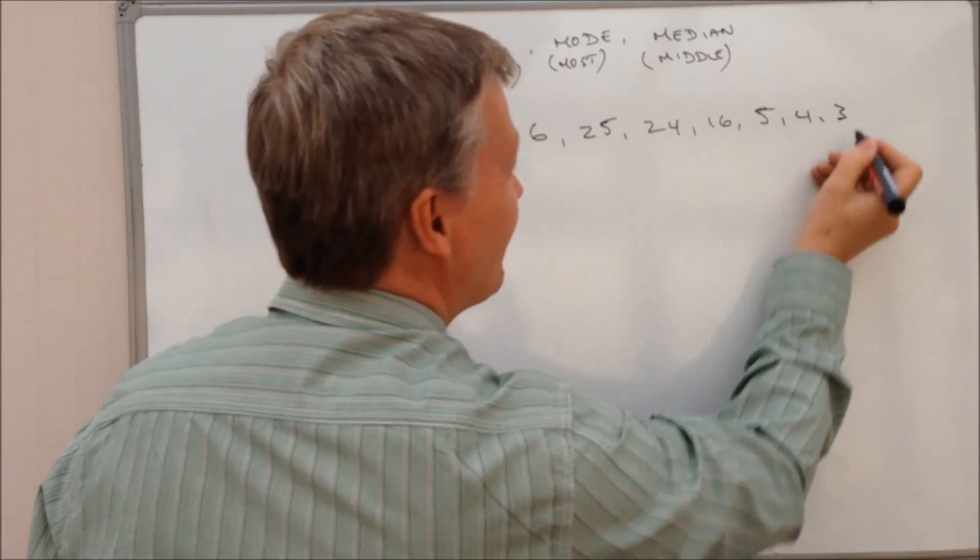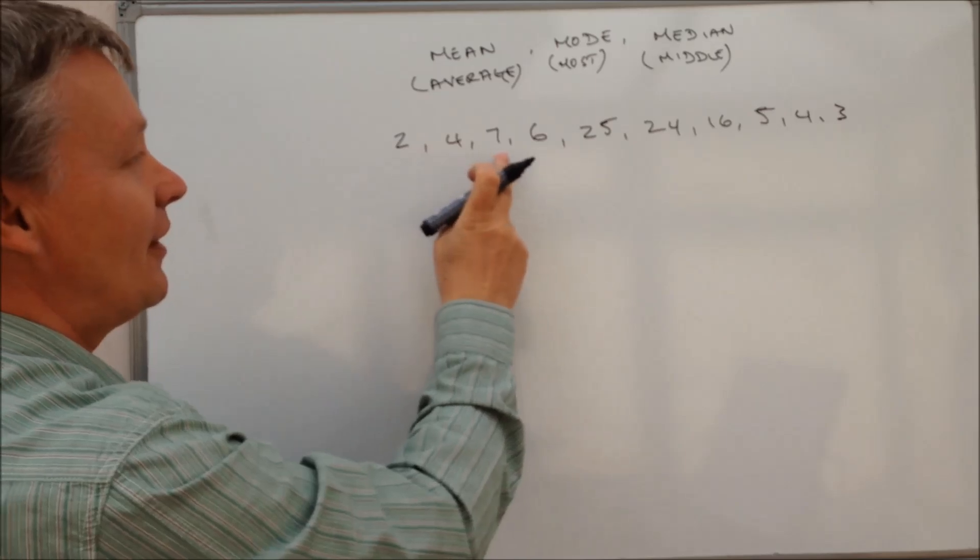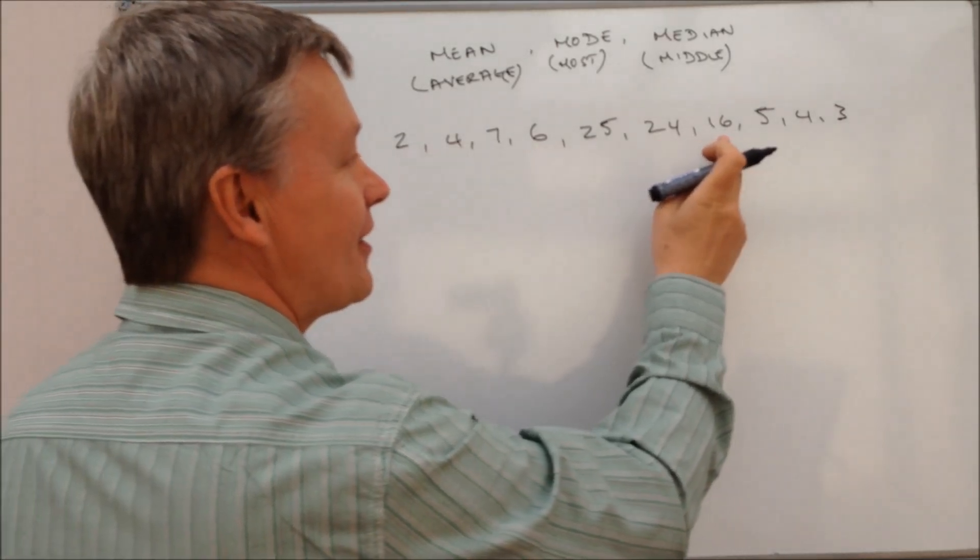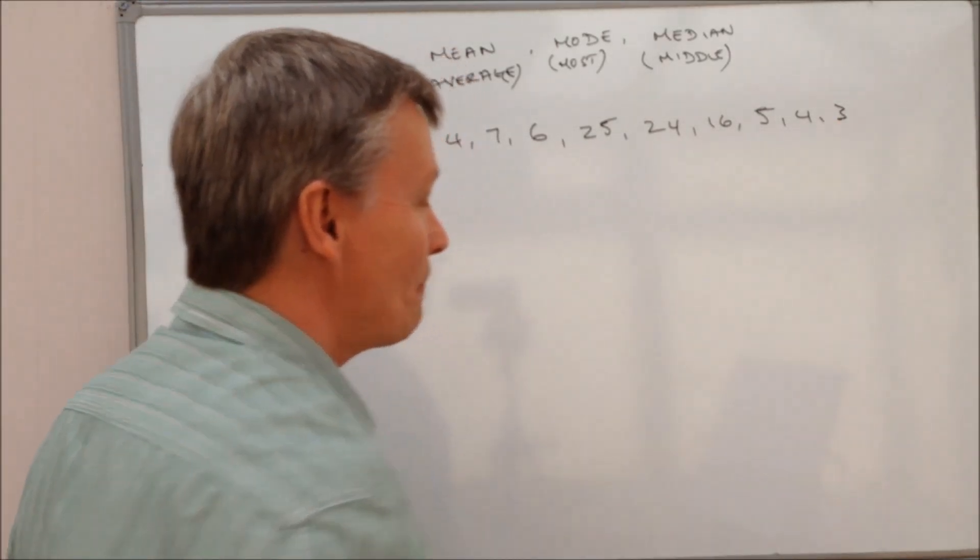All right. So let me write all this out. So there's 10 of them, I think. So one, two, three, four, five, six, seven, eight, nine, ten.